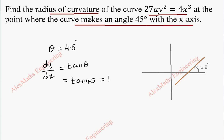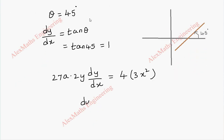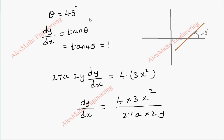From the curve, we are going to find dy/dx. Here, 27a is a constant. Differentiating, we get 27a · 2y · dy/dx = 4 · 3x². Rearranging this, dy/dx equals 4 · 3x² divided by 27a · 2y.